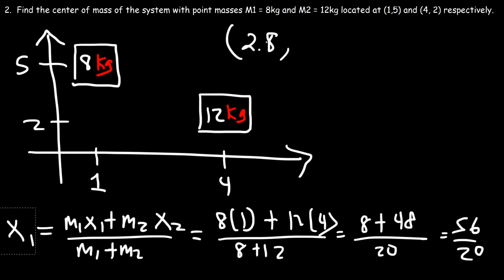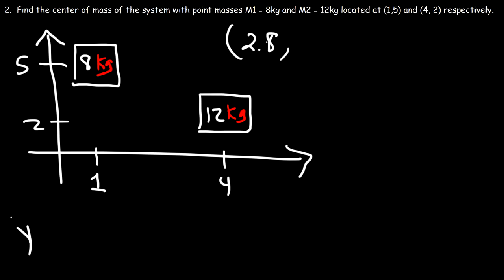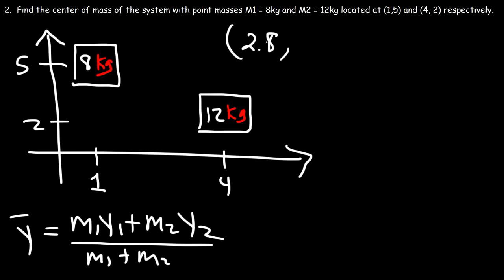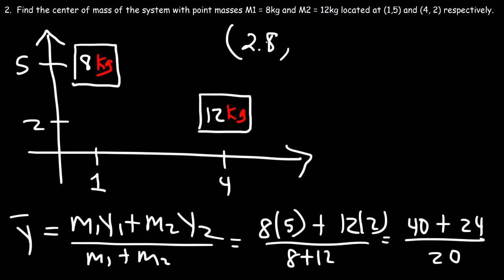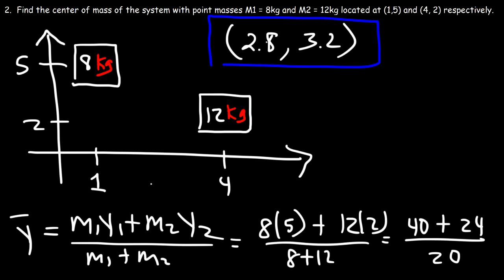For the y-coordinate: ȳ equals m1·y1 plus m2·y2 divided by m1 plus m2. m1 is 8, y1 is 5; m2 is 12, y2 is 2; divided by 20. So 8×5 is 40, 12×2 is 24, 40 plus 24 is 64 over 20, which equals 3.2. The center of mass is at (2.8, 3.2), a little closer to the 12 kg mass.